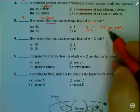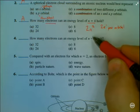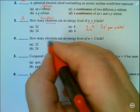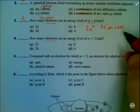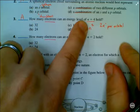Up here, we identify that we're going to use the equation 2n² because we're being asked for the number of electrons. If we were being asked for the number of orbitals, we would just use n².